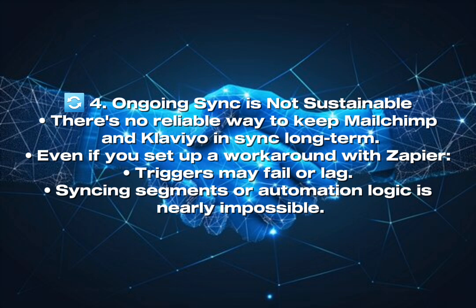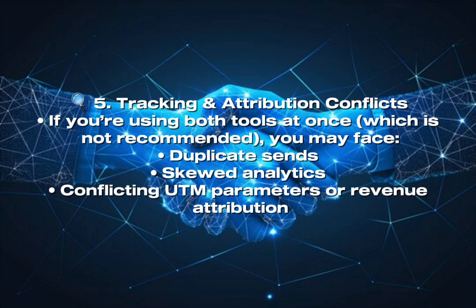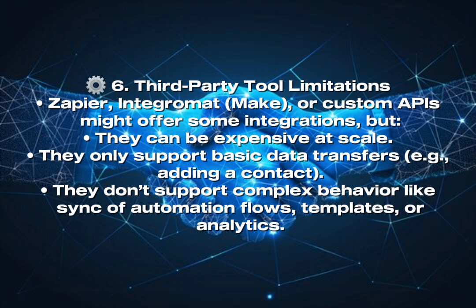Challenge 4 — Ongoing Sync is Not Sustainable: There's no reliable way to keep Mailchimp and Klaviyo in sync long-term. Even if you set up a workaround with Zapier, triggers may fail or lag, and syncing segments or automation logic is nearly impossible. Challenge 5 — Tracking and Attribution Conflicts: If you're using both tools at once — which is not recommended — you may face duplicate sends, skewed analytics, conflicting UTM parameters, or revenue attribution issues. Challenge 6 — Third-Party Tool Limitations: Zapier, Make, or custom APIs might offer some integrations, but they can be expensive at scale and only support basic data transfers like adding a contact. They don't support complex behavior like syncing automation flows, templates, or analytics.